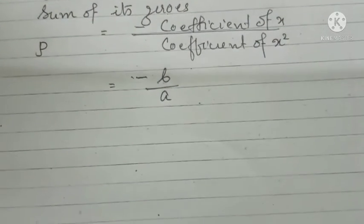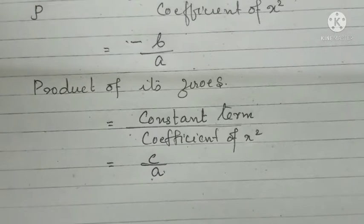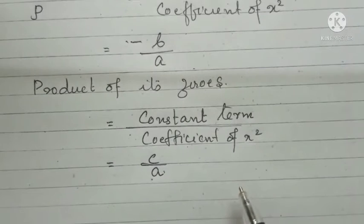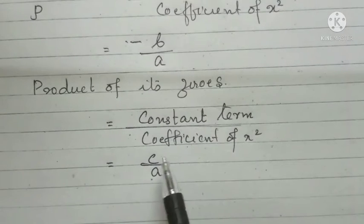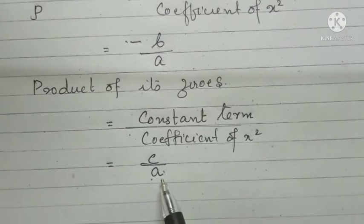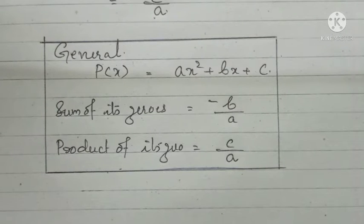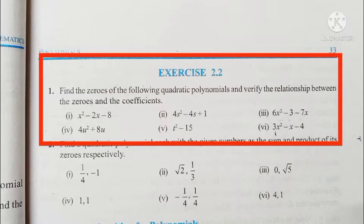Similarly, we can find the product of the zeros. The product equals the constant term divided by the coefficient of x². In the polynomial Ax² + Bx + C, the constant term is C and the coefficient of x² is A. Therefore, the product of zeros is C by A. For exercise 2.2, we must remember: sum of roots = minus B by A, and product of roots = C by A.